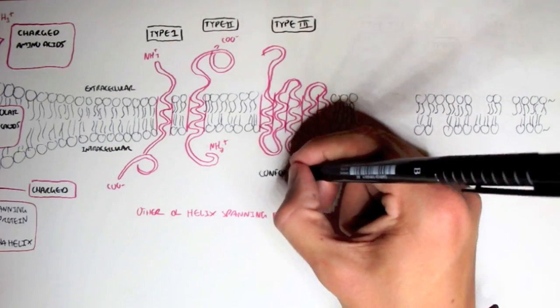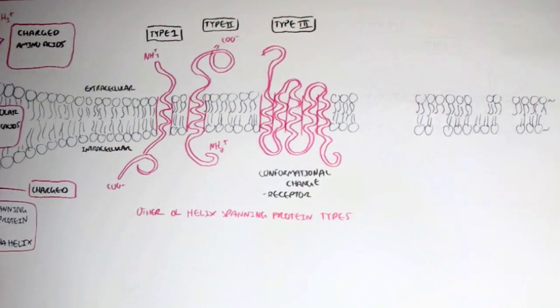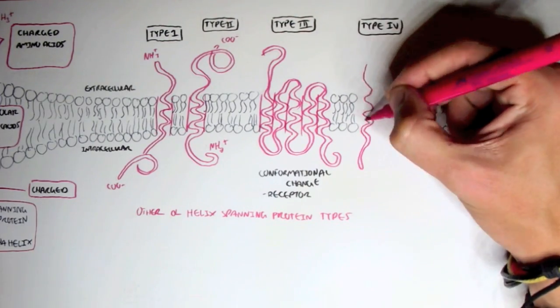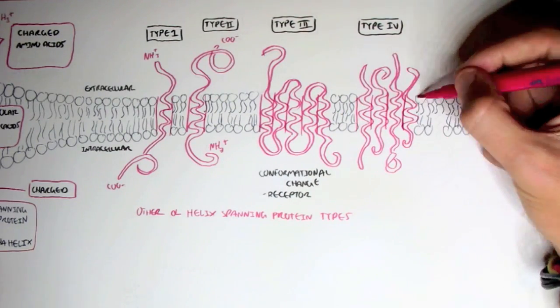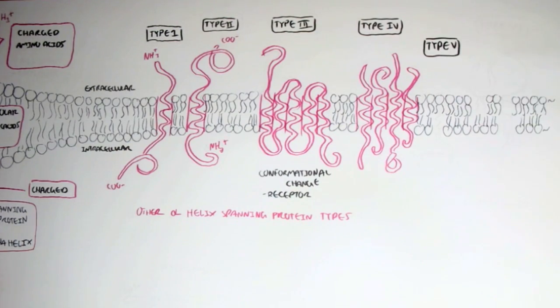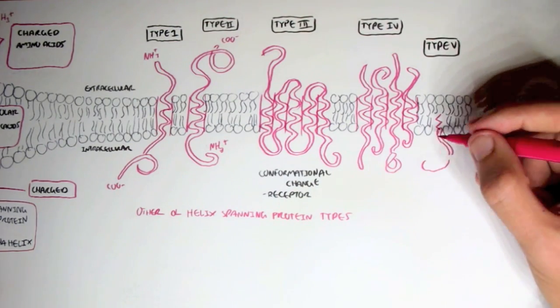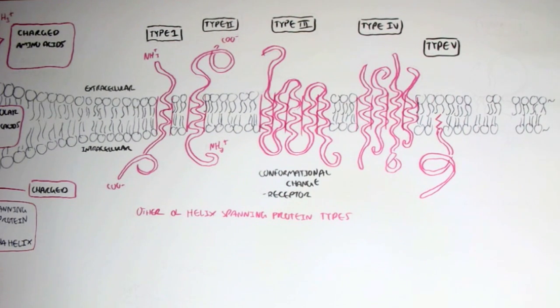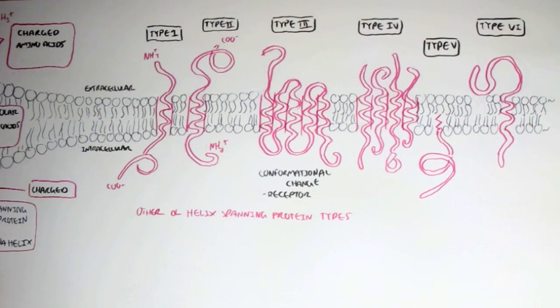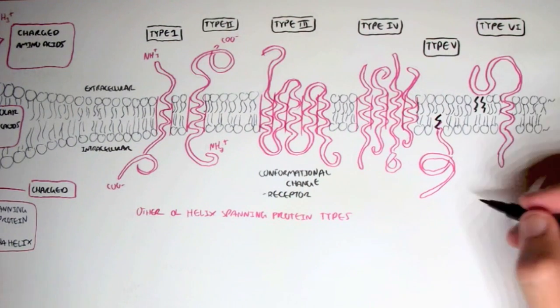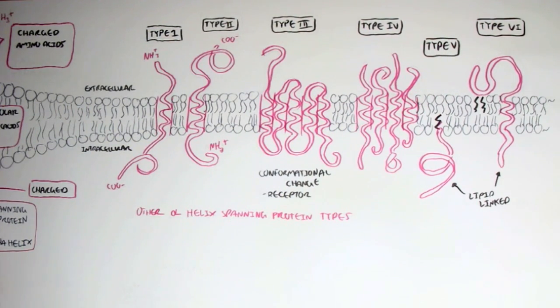Type 4 is also a multiple transmembrane protein but for different polypeptides — they assemble together and amplify the same response. Type 5 proteins are held to the bilayer primarily by covalently linked lipids. Type 6 proteins have both transmembrane helixes and lipid anchors.